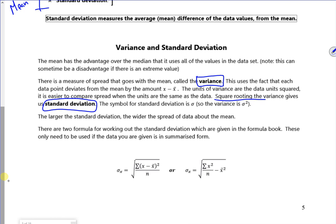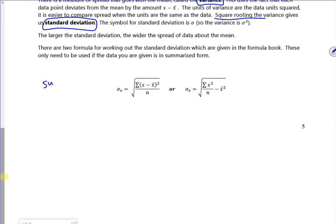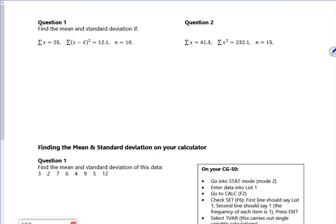There are two equations in the booklet, in the formula booklet, for if we're given summary stats. That there is the symbol for the standard deviation, it is sigma. So let's give it a go then. For the mean I know that x bar is the sum of x over n. So x bar is 25 over 10, x bar is 2.5.